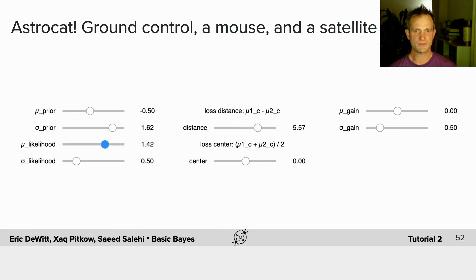In this case, you'll be able to control the distance between the satellites and the center of mass between the two satellites, as well as the location of SpaceMouse and, of course, the prior and the likelihood for AstroCat.